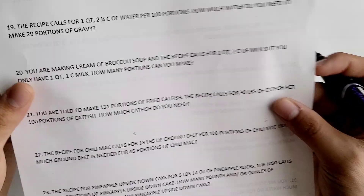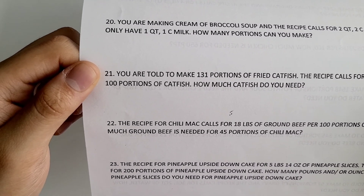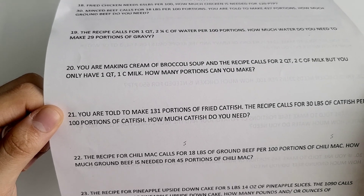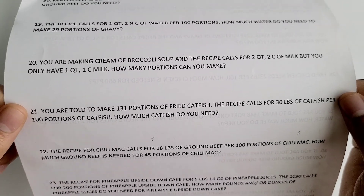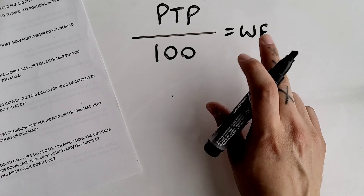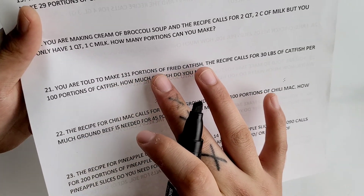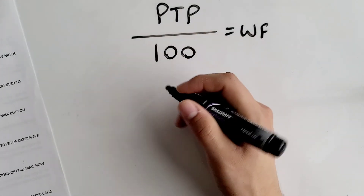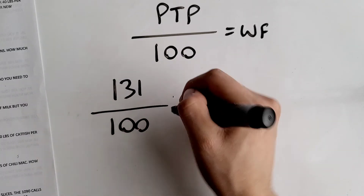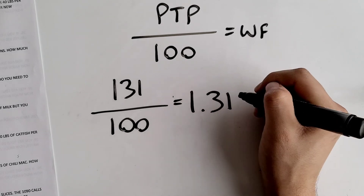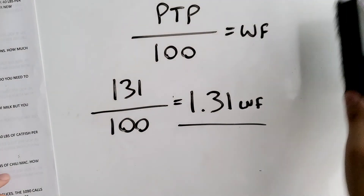Number 21: you are told to make 131 portions of fried catfish. The recipe card calls for 30 pounds of catfish per 100 portions. How much catfish do you need? So again, the first thing you want to find is your working factor. Your portions to prepare is 131 portions of fried catfish — that is your portions to prepare.